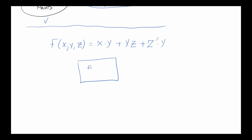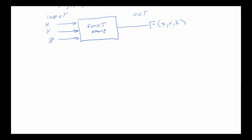Anytime you're given a function or a description of what you need to design, the next step should always be a system diagram — not to be confused with a block diagram. A system diagram is simply a box with the function name inside, all the inputs on one side, and all the outputs on the other side. Anytime you are considering, analyzing, or designing any kind of system, a system diagram is required — a design without one is incomplete.